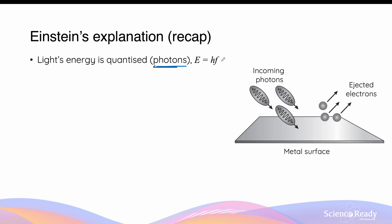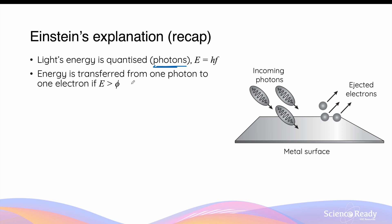In the photoelectric effect, when light is illuminated on the metal surface, Einstein said you can perceive that the light's energy is divided into these discrete packets called photons. Each time a photon is incident on the metal surface, it can transfer its energy to an electron in the metal. Most importantly, Einstein emphasized that this energy transfer can only occur between one photon and one electron.